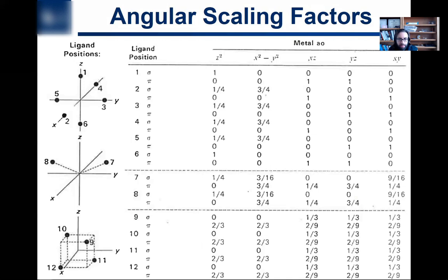All right. So what we end up getting is this table. And this table basically does a bunch of calculus, it's a result of a bunch of calculus, from looking at the degree of overlap of different geometric positions, and the different, the five different d-orbitals. So, for example, ligand position one, this is in an octahedral sort of environment.